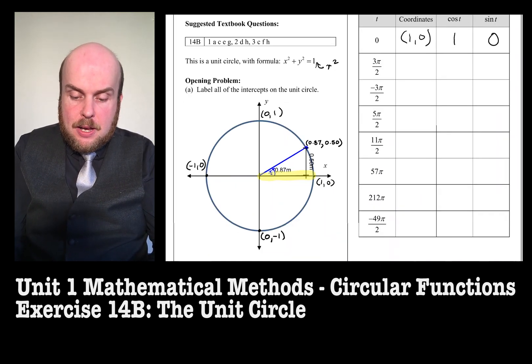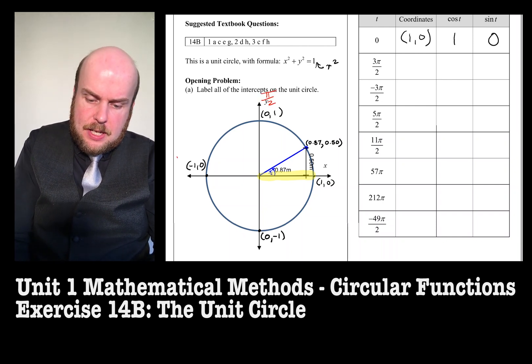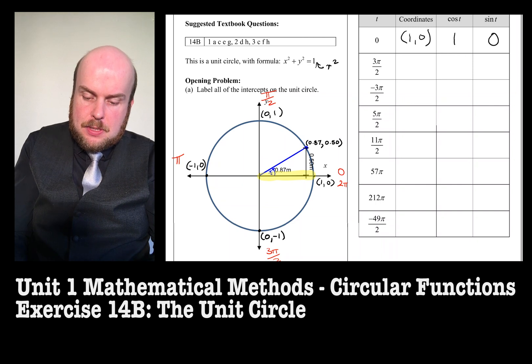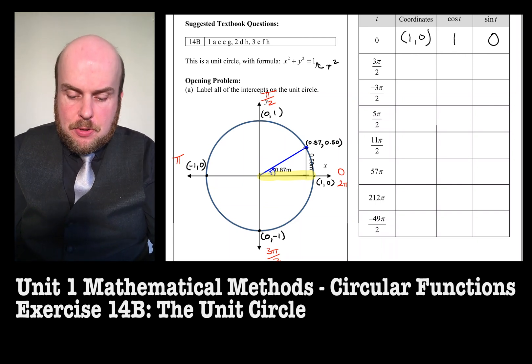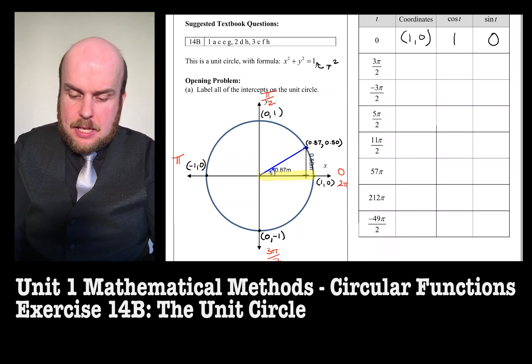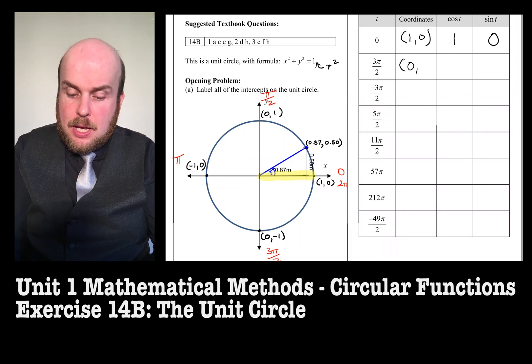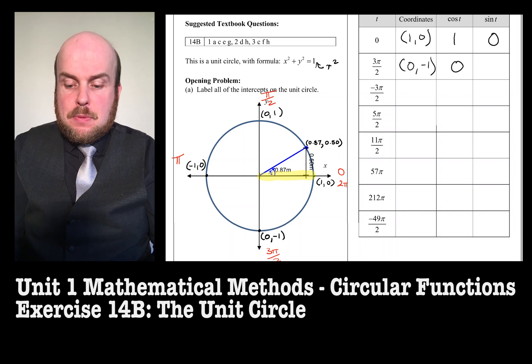Now 3 pi over 2, so where's 3 pi over 2? Well, remember that pi over 2 is over here, pi is here, 3 pi over 2 is here, and then we go back to 2 pi, or 0 is over here. So 3 pi over 2 is all the way down here. So the coordinates where the circle hits the angle 3 pi over 2 is 0, negative 1. Therefore, cos of 3 pi over 2 is 0, and sine of 3 pi over 2 is negative 1.